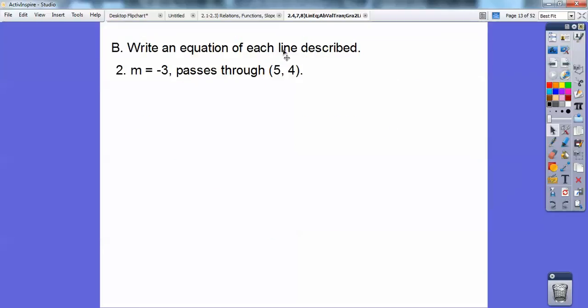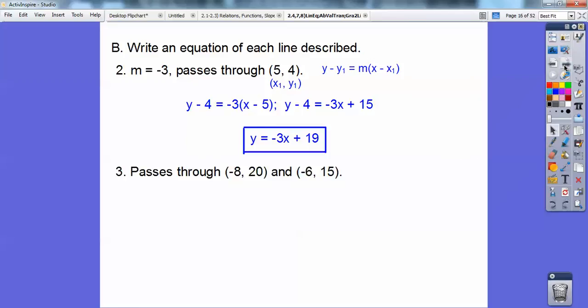They give me the slope and a point. I'm going to do point-slope form right here. y - y1 = m(x - x1). Here's x1, here's y1. I'm going to distribute the -3 through because they want me to put it in slope-intercept form. I get -3x, and a negative times negative is a positive 15. And then I just added 4 to both sides to the 15, and I got y = -3x + 19.